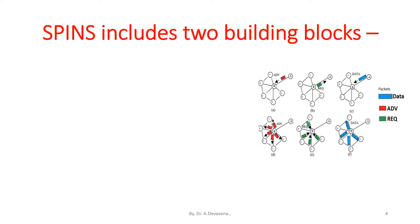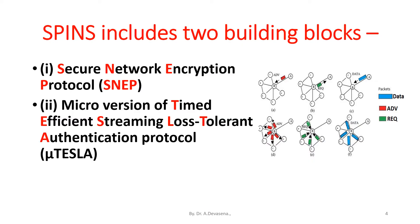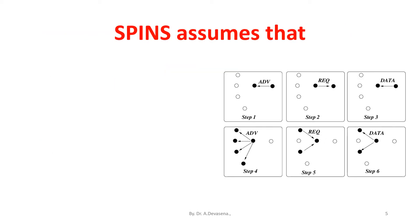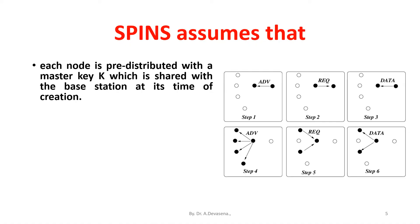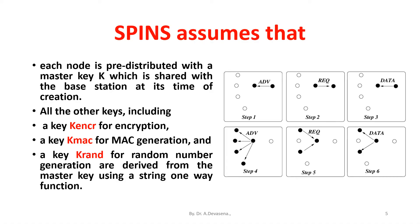SPIN includes two building blocks: secure network encryption protocol (SNEP) and the micro version of timed efficient streaming loss-tolerant authentication protocol (μTESLA). SPIN assumes that each node is pre-distributed with a master key K, shared with the base station at its time of creation. All other keys — K_ENCR for encryption, K_MAC for MAC generation, and K_RAND for random number generation — are derived from the master key using a one-way function.